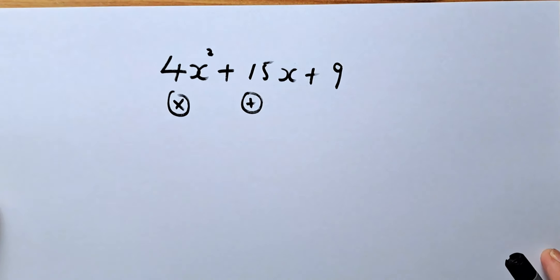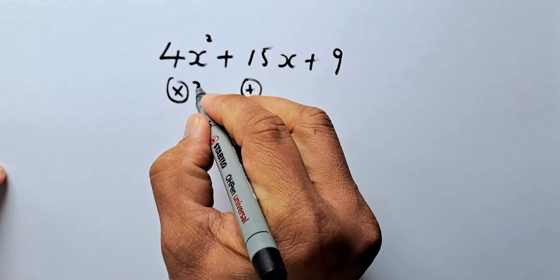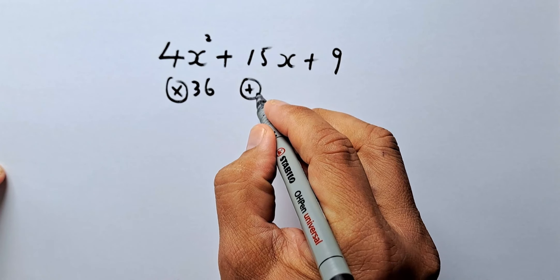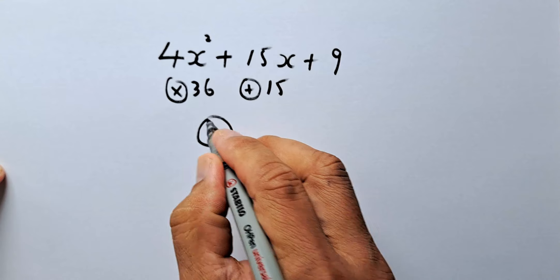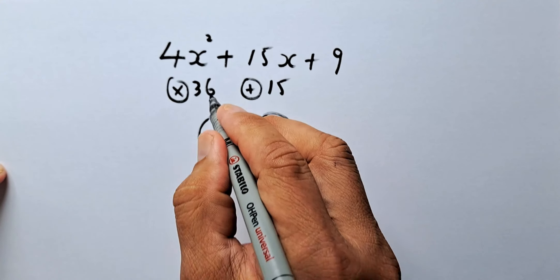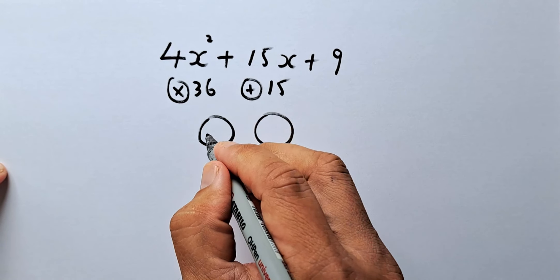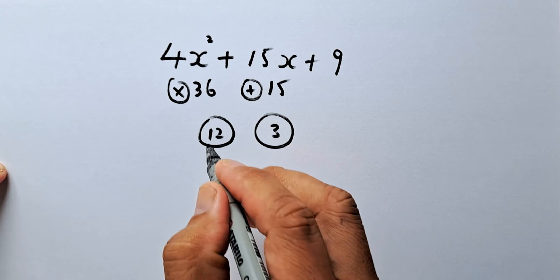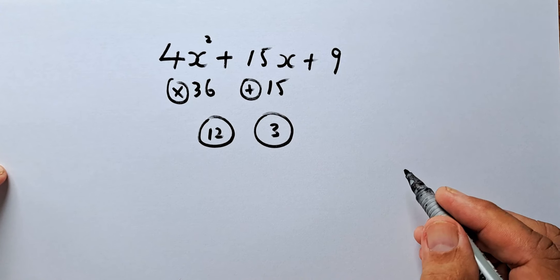And last but not least, we shall look at another example. The multiplication number: 4 times 9 is 36. The addition number is going to be 15. Find the two factors that multiply to give you 36 and add to give you 15. The answer is 12 and 3, because 12 times 3 is 36 and 12 plus 3 is 15.